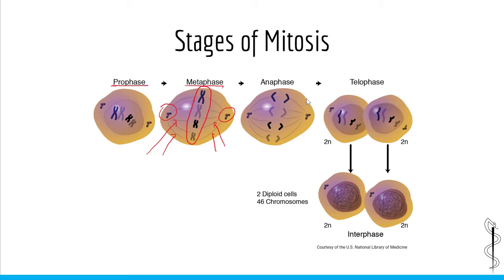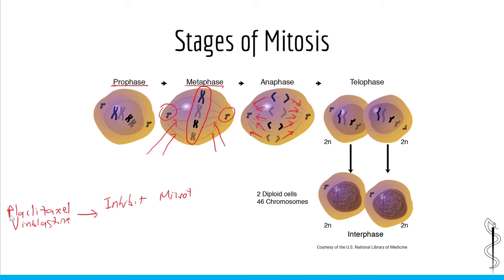The next phase is anaphase. During anaphase, the chromosomes are pulled to the opposite poles of the cell by the action of microtubules. It is important to recognize that metaphase and anaphase are the phases in which antineoplastics such as paclitaxel and vinblastin exert their effect. These drugs work by inhibiting the action of microtubules, which are essential for mitosis progression. The last phase of mitosis is telophase, in which the chromosomes begin to decondense back to chromatin and the nuclear envelope reforms.